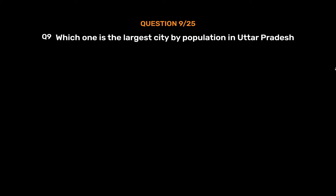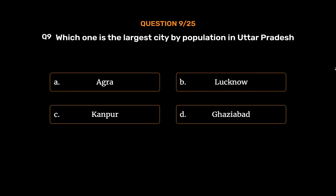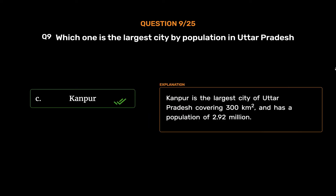Question No. 9: Which one is the largest city by population in Uttar Pradesh? Option A: Agra. Option B: Lucknow. Option C: Kanpur. Option D: Ghaziabad. The correct answer is Option C: Kanpur.